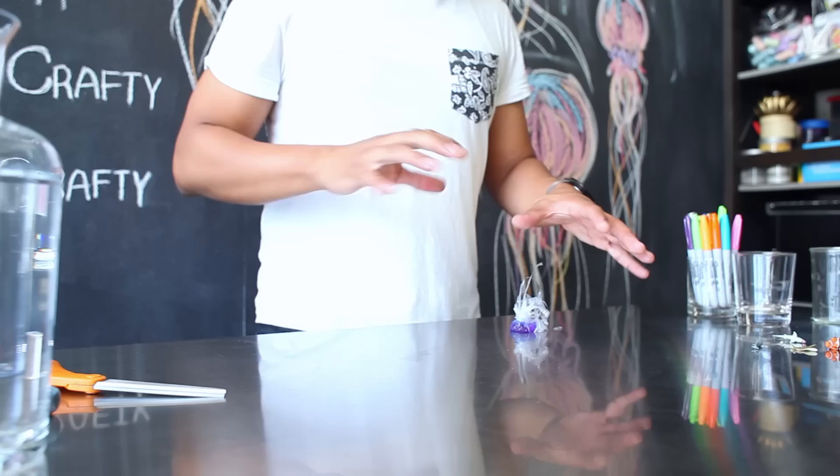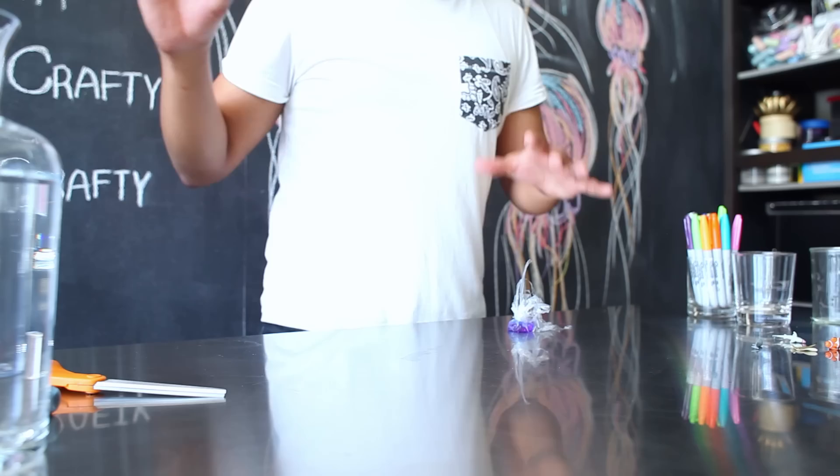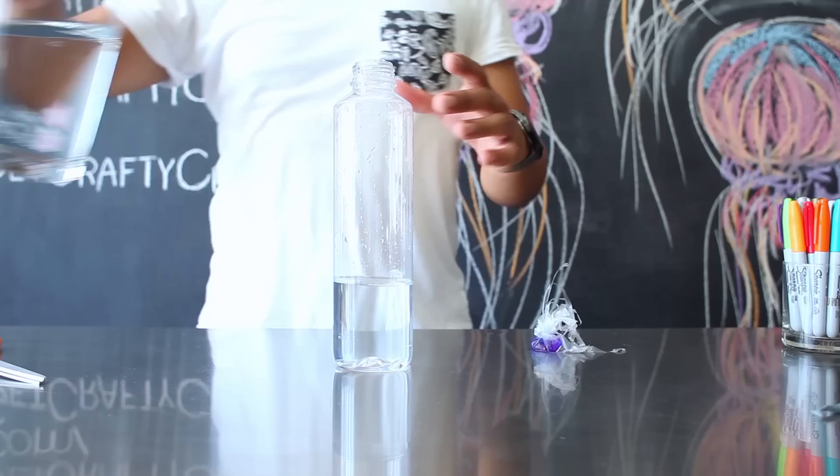You also want to have probably at most 10 to 12 tentacles just so that they don't get tangled inside your water bottle. After you've created your jellyfish it's actually going to look a little weird but don't worry too much because it's going to look completely different once you put it inside your water bottle.